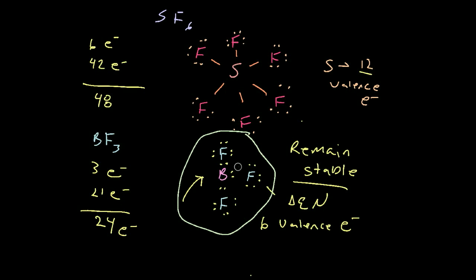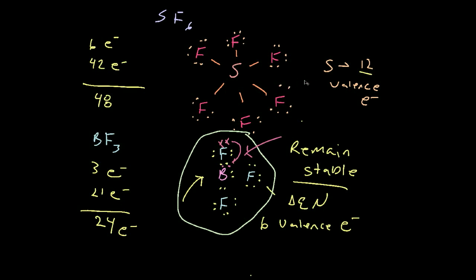A big temptation is to take two electrons from a fluorine lone pair and move them over to make a double bond with boron — that way boron has eight and fluorine has eight. We'll talk about why that's not the case in a future video. Look forward to a video on d orbitals and how you can have valence electrons there to exceed twelve. Anyway, I hope that wasn't too confusing — thanks for watching.